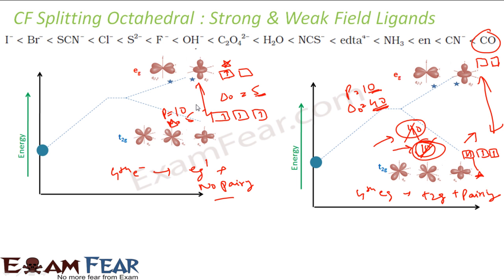Weak field ligands form high spin complexes because electrons are not pairing — more unpaired spins exist. Strong field ligands form low spin complexes because pairing of electrons occurs, reducing the number of unpaired electrons and thus the overall spin.